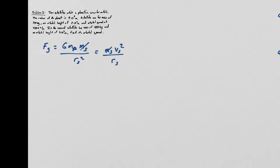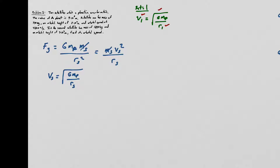Canceling one factor of r, we get orbital velocity v = √(G·M_planet/r) for either satellite. The problem doesn't give us the planet's mass, but it gives us enough information about satellite 1 to find it. For satellite 1 we know v₁, G, and R₁, so that's one equation and one unknown — we can solve for M_planet.